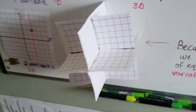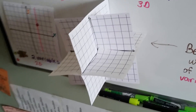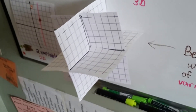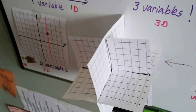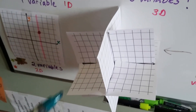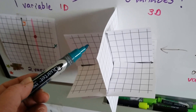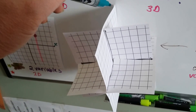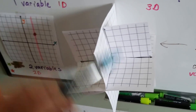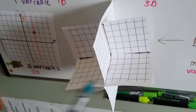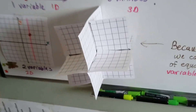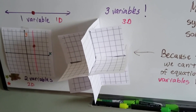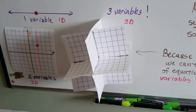Can you imagine having to graph something on that? It's actually three sheets of paper. We've got one piece of paper here, another one here crossing it, and another one coming through the middle of the other two. So that's three variables — it would be graphed on a plane that looks like that.